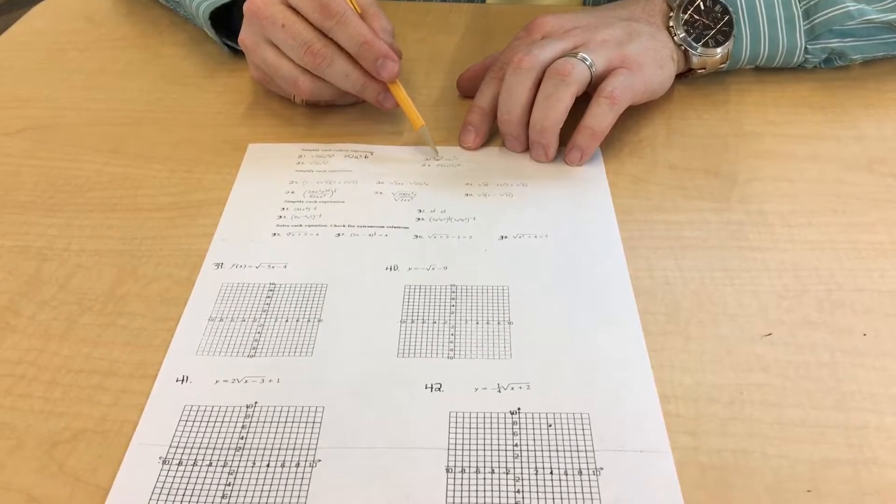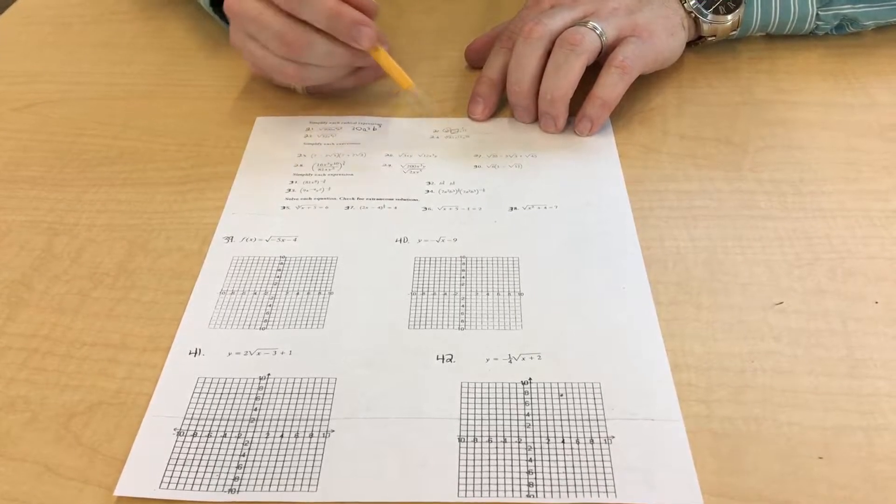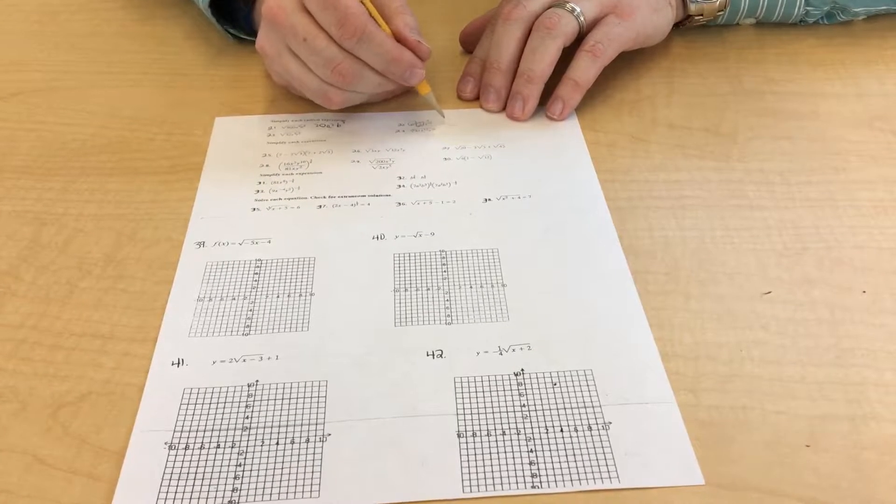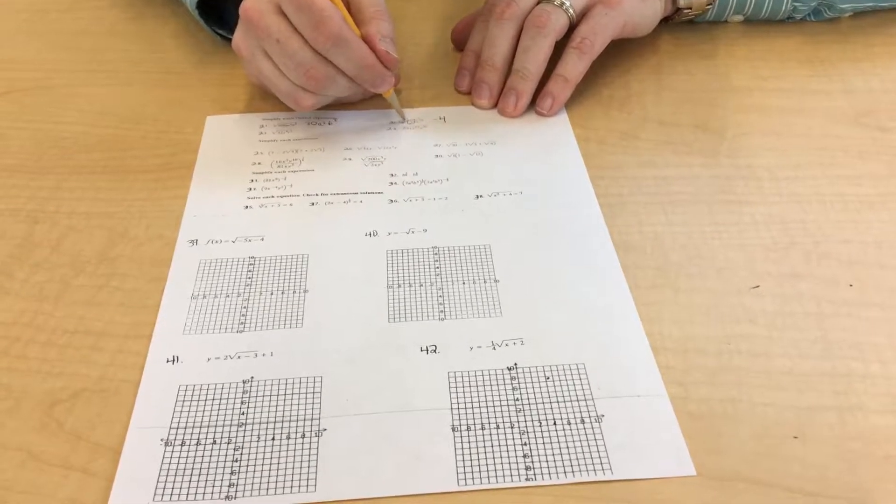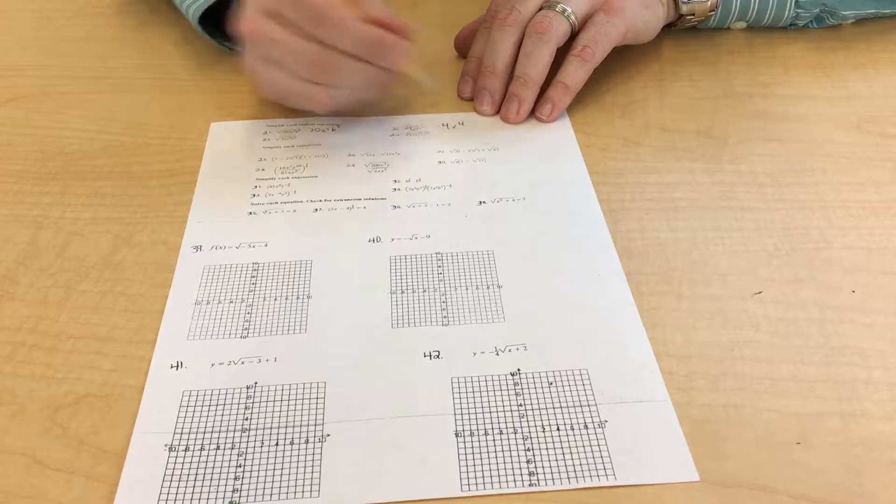Remember, if you're cube rooting or if you're 5th rooting and it's a negative number, it's going to be a negative outcome. So the cube root of negative 64 is negative 4. The cube root of x to the 12th, that's 12 over 3. So that's x to the 4th power.